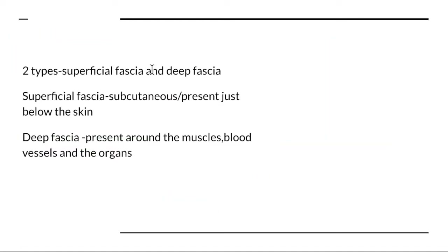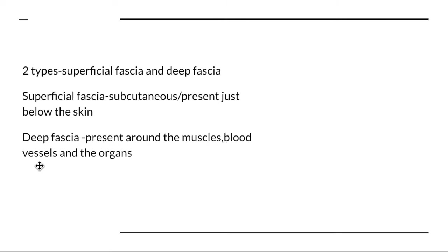Fascia is made up of two layers: the superficial fascia and the deep fascia. The superficial fascia is subcutaneous and is present just below the skin, and the deep fascia is present around the muscles, the blood vessels, and the organs.